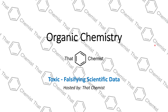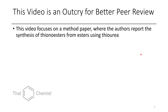Welcome back to another special episode of Organic Chemistry. Today is the first episode in a new series called Toxic: Falsifying Scientific Data. We're going to talk about a paper that is a method paper, where the authors report that you can convert esters into thionoesters using thiourea.